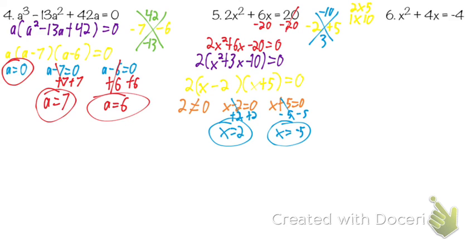Number 6: is this equal to zero? No — we have to get it equal to zero. How? Add 4, because it's negative this time. And where is this plus 4 going? Third — it doesn't have an x, so it goes at the end. So x squared plus 4x plus 4 equals zero.